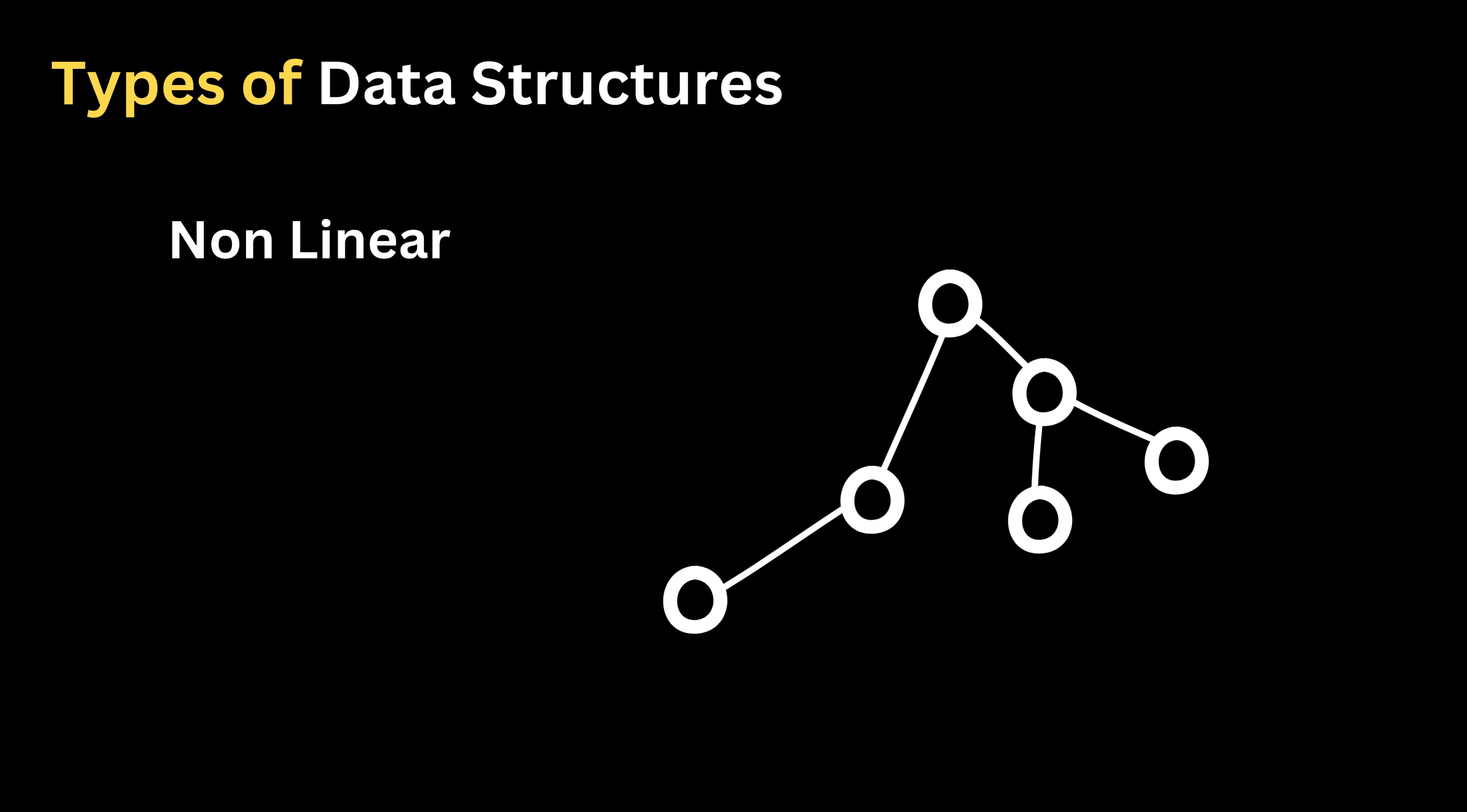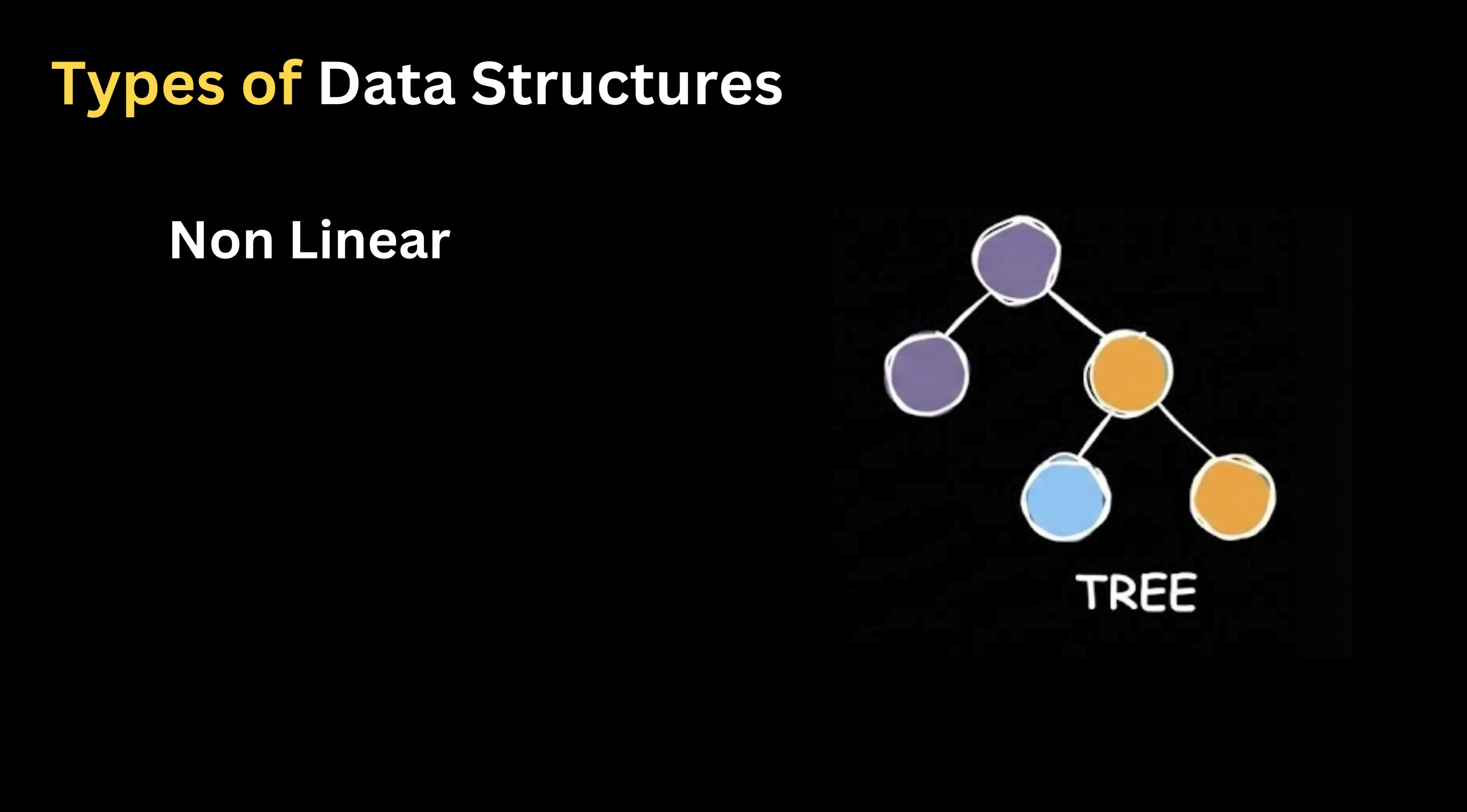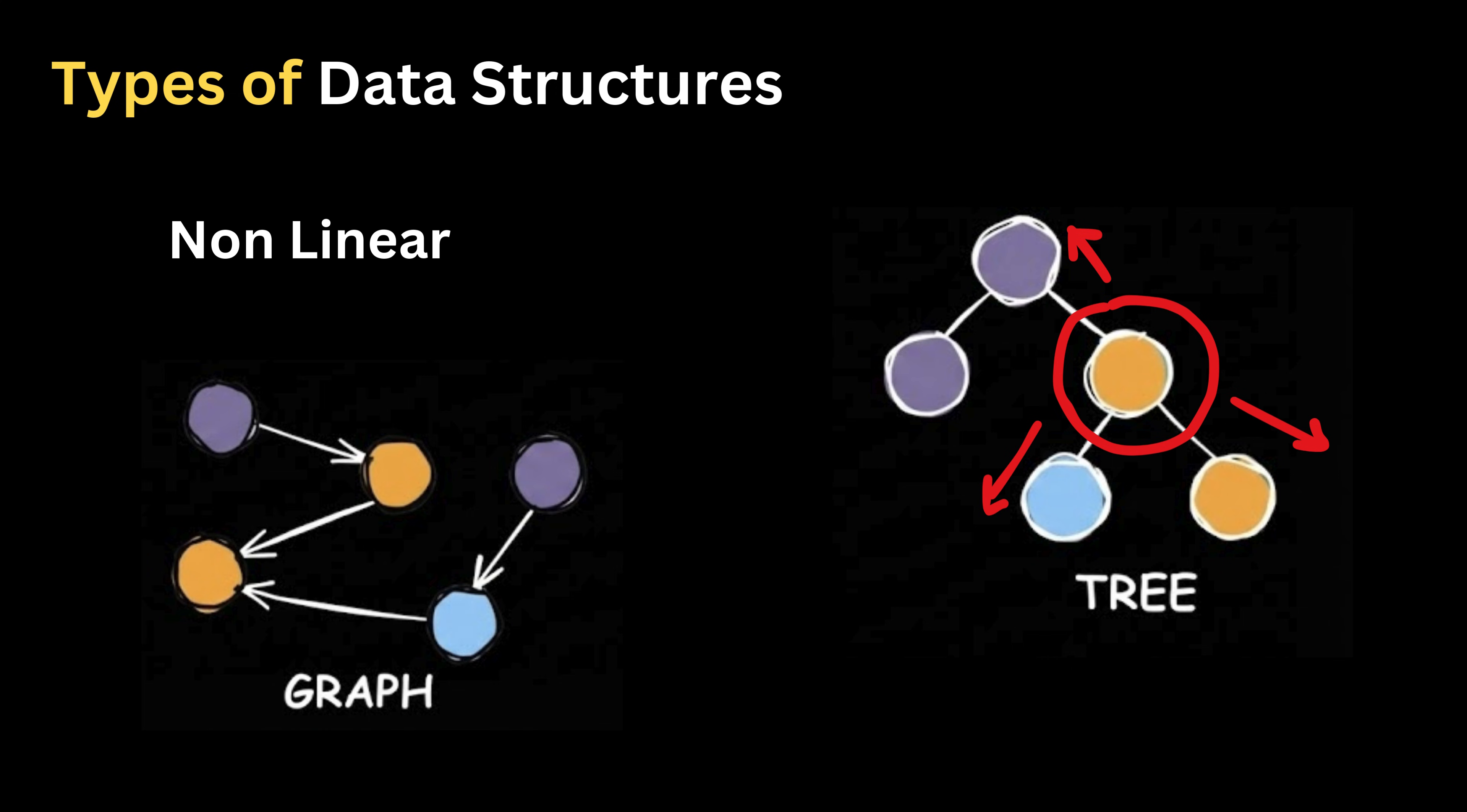A structure becomes non-linear when this straight ordering does not exist. The elements do not follow a single chain. Instead, a single element may connect to many others. A tree is a perfect example where one node may point to two or more children, so it does not satisfy the one predecessor, one successor idea. A graph is another common non-linear structure because nodes can have multiple connections going in many directions. These structures spread out instead of forming a single sequence.